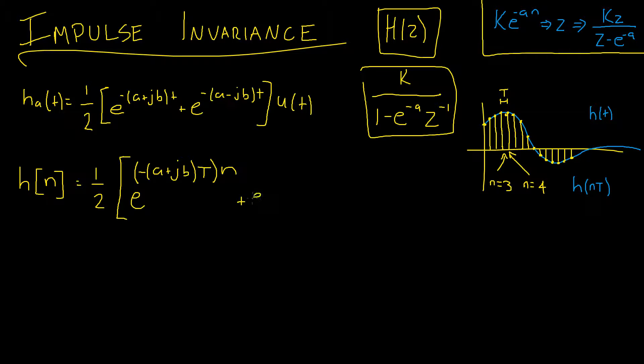Then we add e to the negative, again alpha minus j beta this time, and then that's multiplied by our sampling period t and then that's all multiplied by our n, our iterator. And then remember this is all multiplied by u of n—this is no longer t, this becomes n.